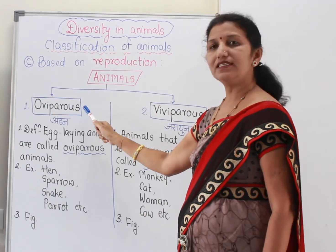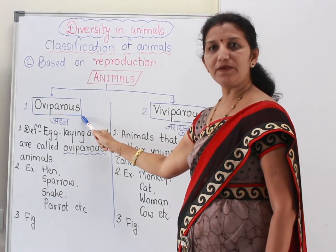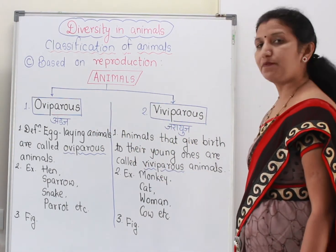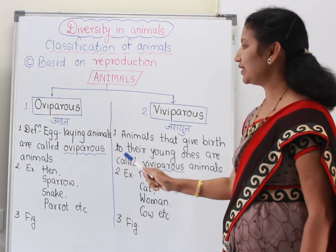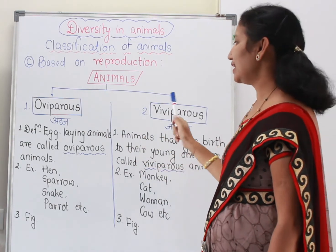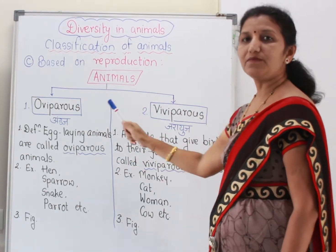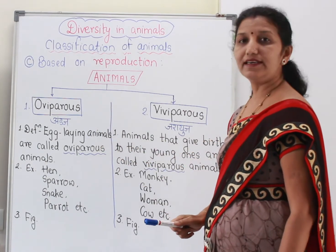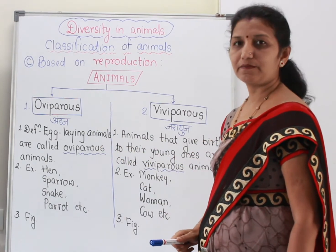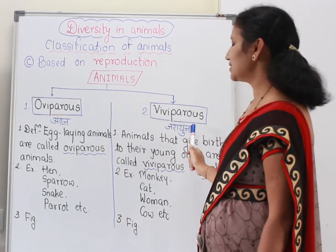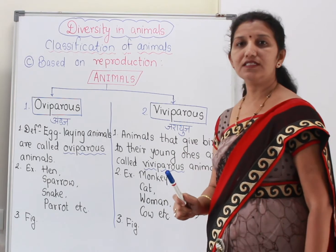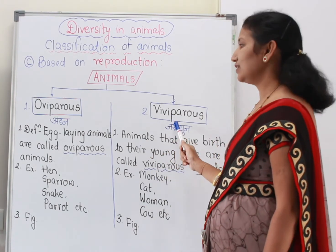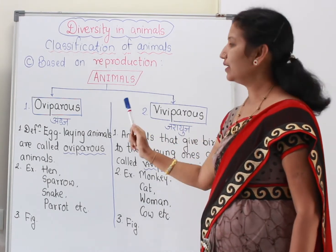The first one is oviparous whereas the second one is viviparous. In Marathi, oviparous animals are called 'andas prani' and viviparous animals are called 'jarayus prani' or 'pilanna janma denare prani'.